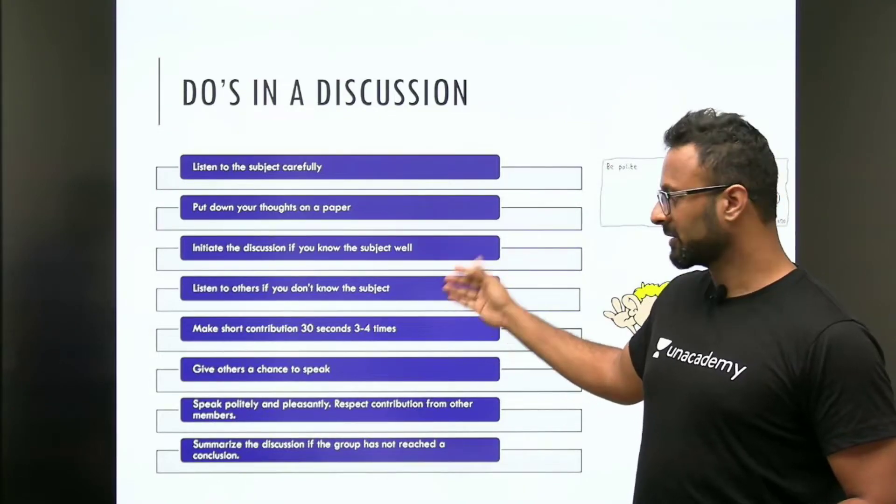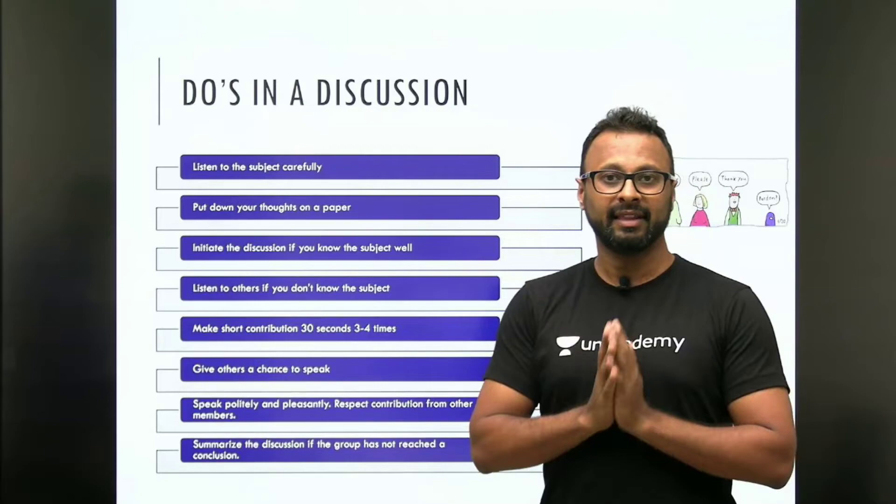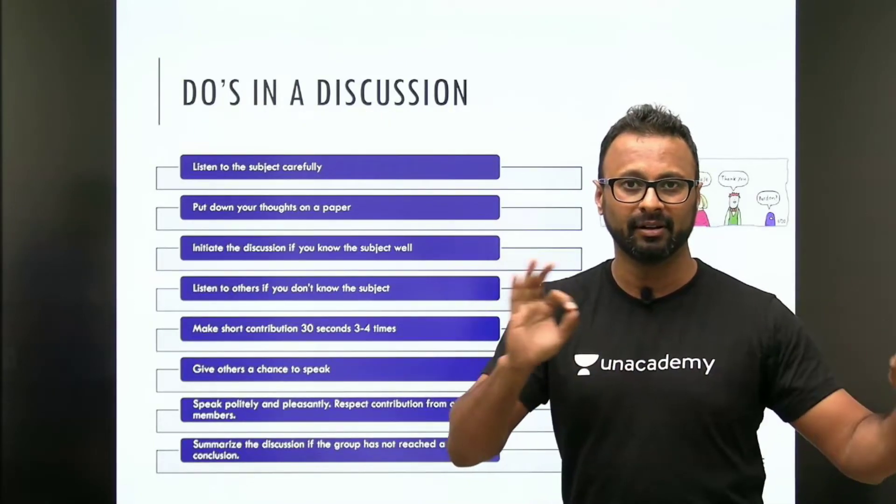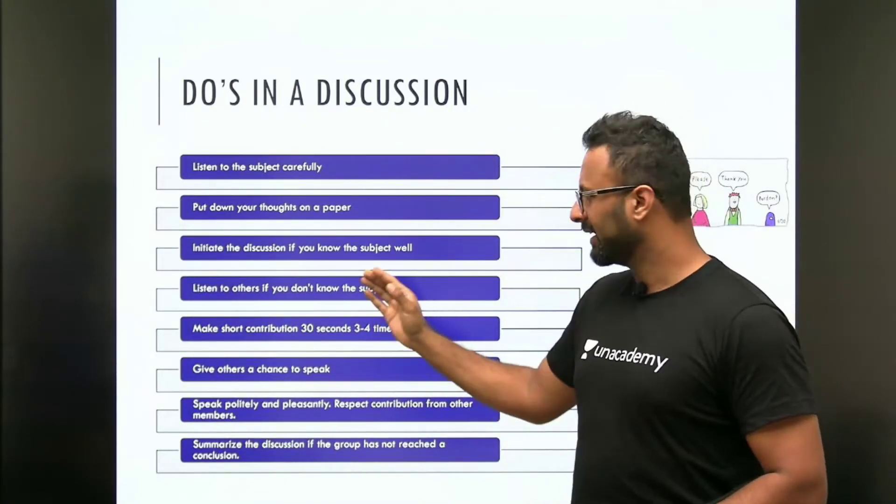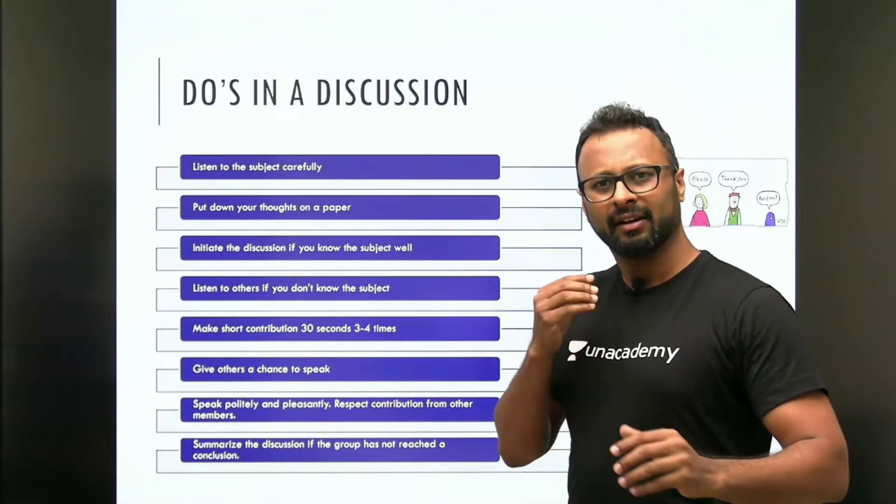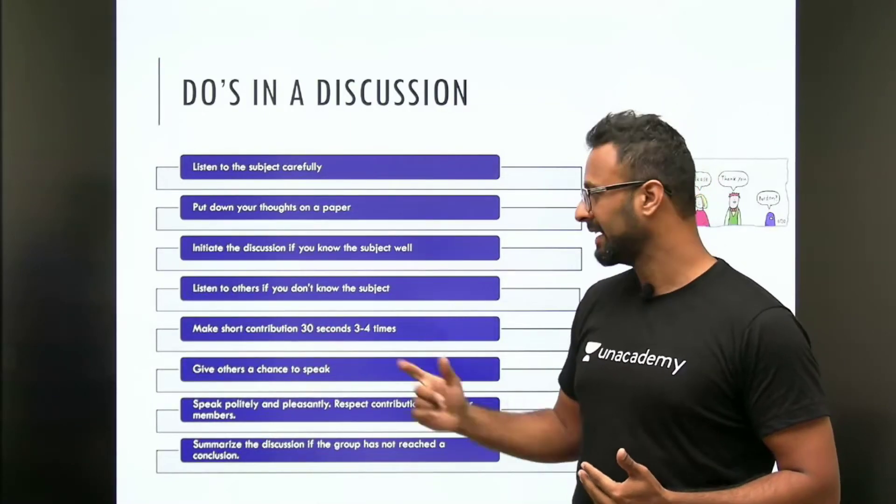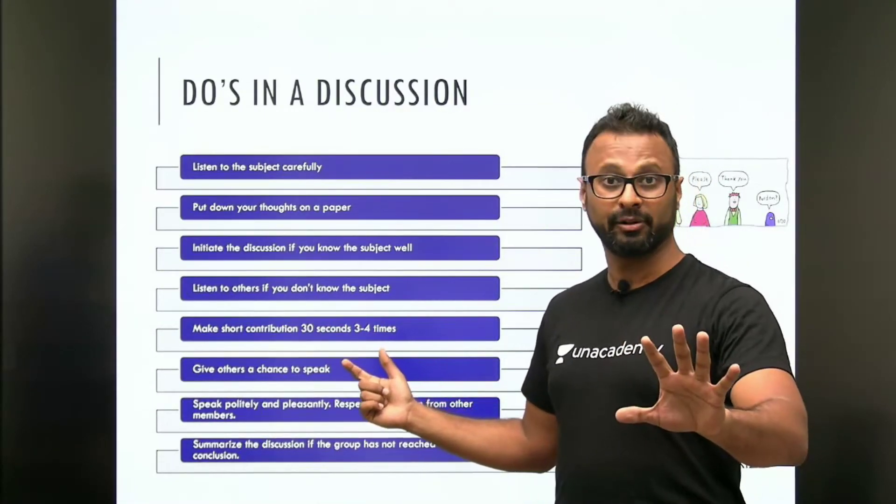Listen to others, if you don't know the subject. Make short contributions of 30 seconds, 3 to 4 times. That is not a prescription. There is no blueprint. However, this is acceptable. Nobody is going to allow you to speak more than 30 seconds. So, talk for 30 seconds. If they are allowing, continue. Normally, there is an interjection from the other side. 3 to 4 times is what you would want to contribute.